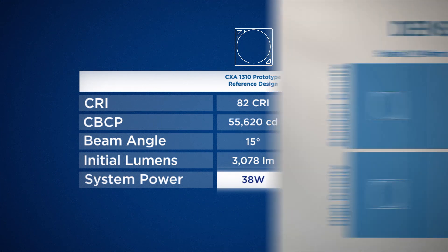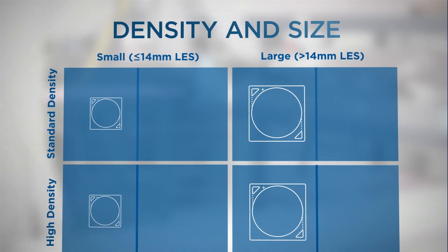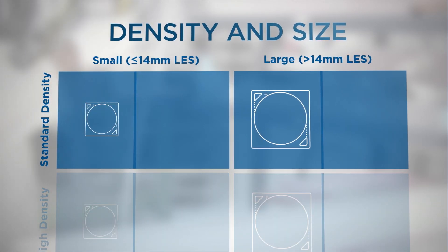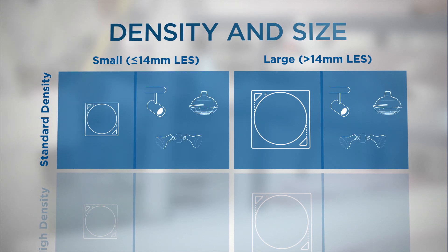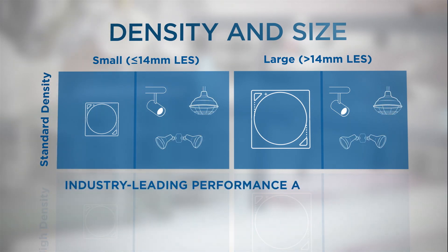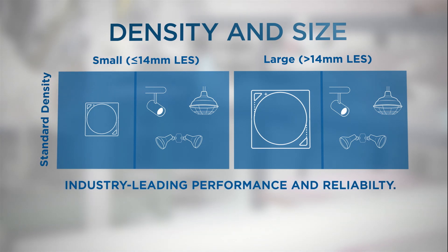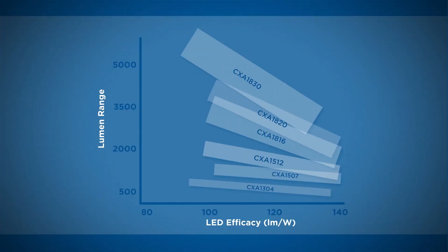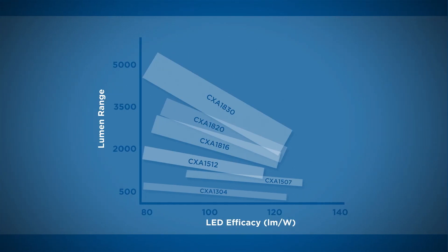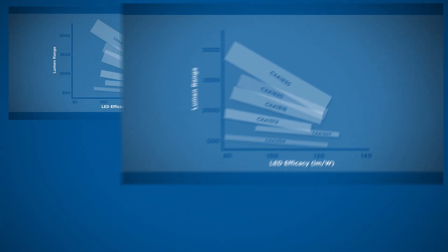Now let's talk about standard density arrays. Standard density arrays are optimal for everything from small spotlights to warehouse and outdoor area lights. For each size, Cree has industry leading performance and excellent reliability. You can use our charts to find the most efficient standard density CXA for your lighting needs.